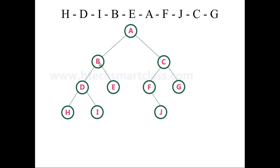If you see A, B is the left node. B is the root node for D and E, so we take the left node D. D is again the root node for H and I, so H will be visited first, then root node D, then right side I. Left node is completely visited, then root node B, then right node E. Once the left subtree is completely visited, root node A is visited, then the right node C. C is a root node for F and G. F has no left node, so root node F is visited, then right node J. Then root node C is visited, then right node G. All nodes have been completely visited.